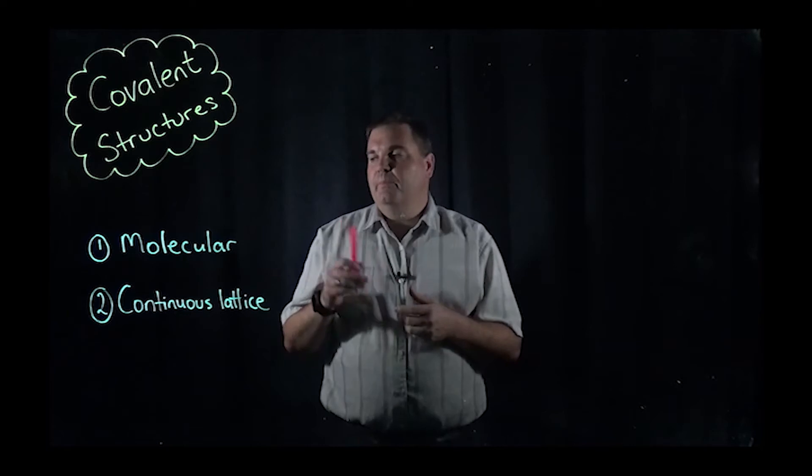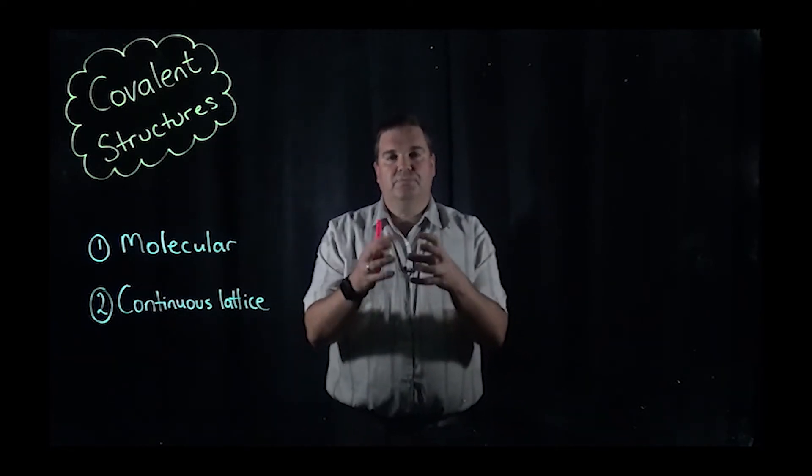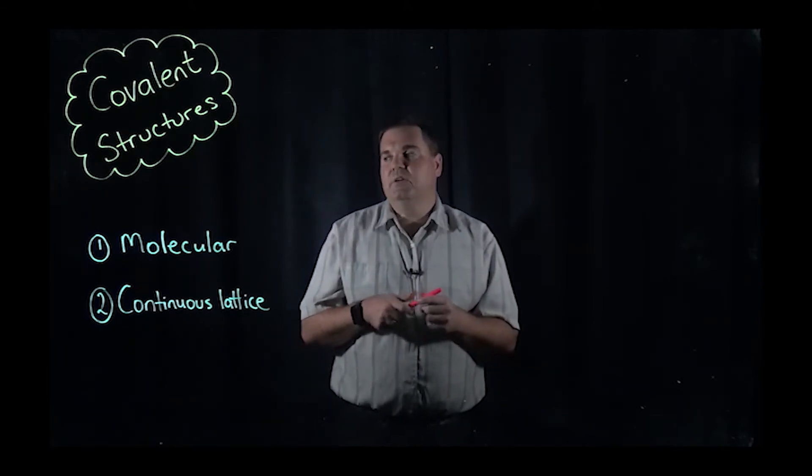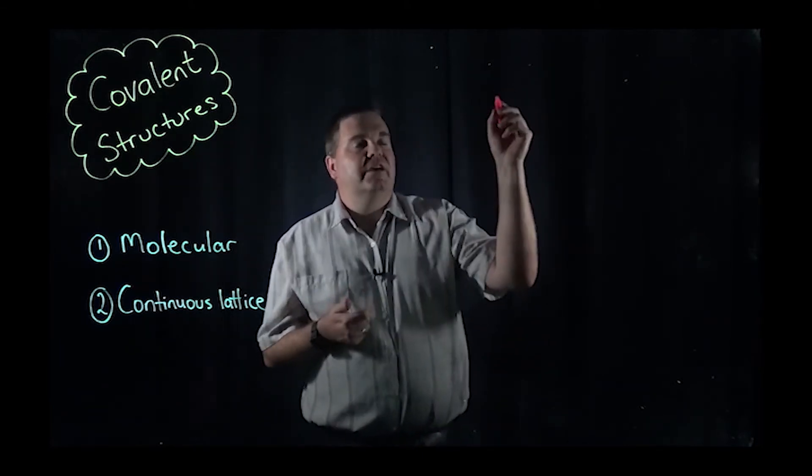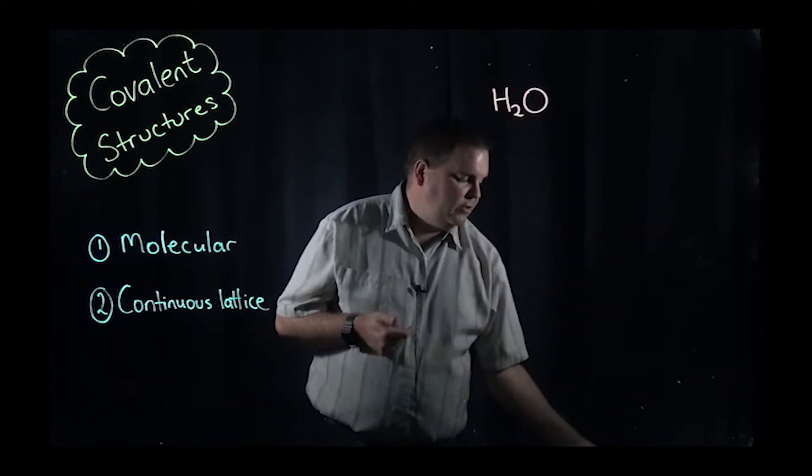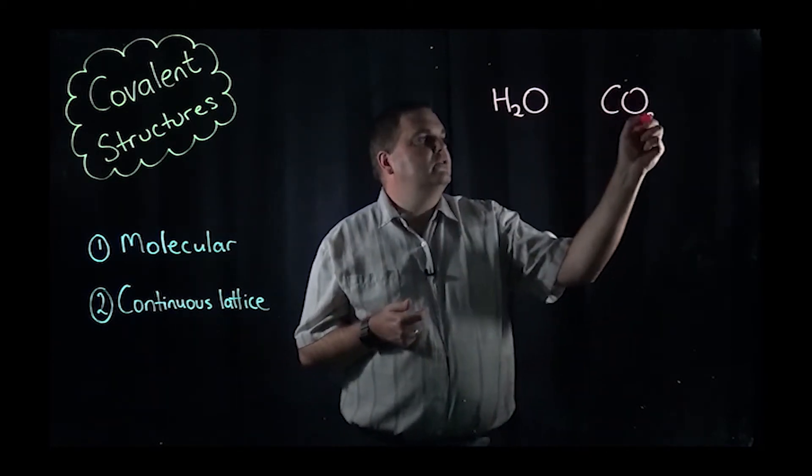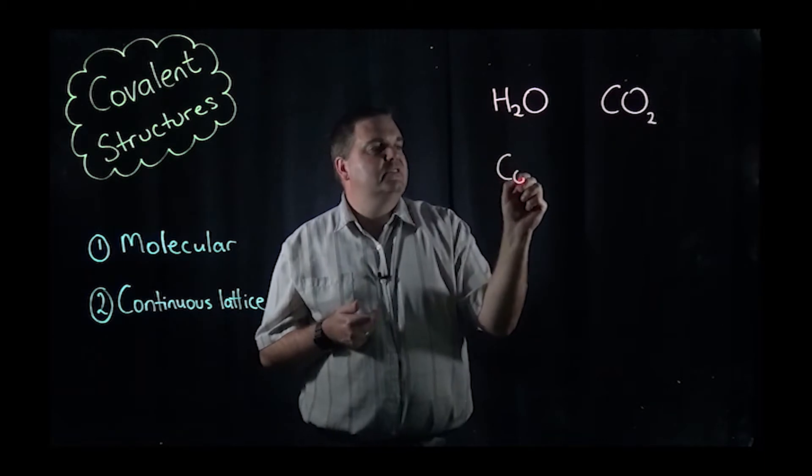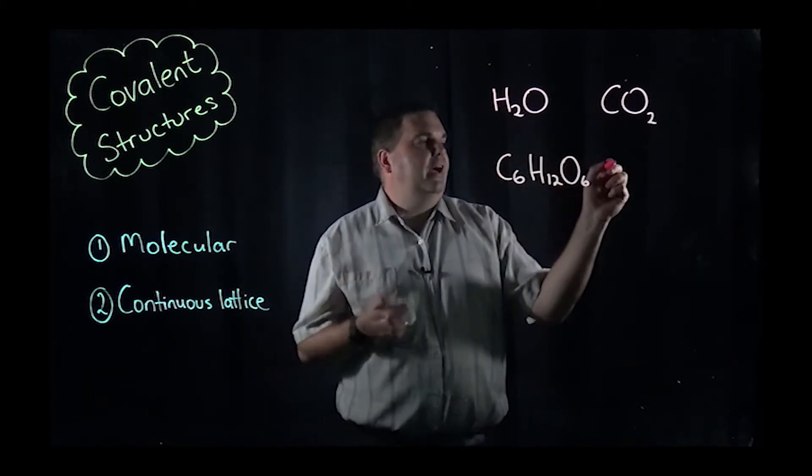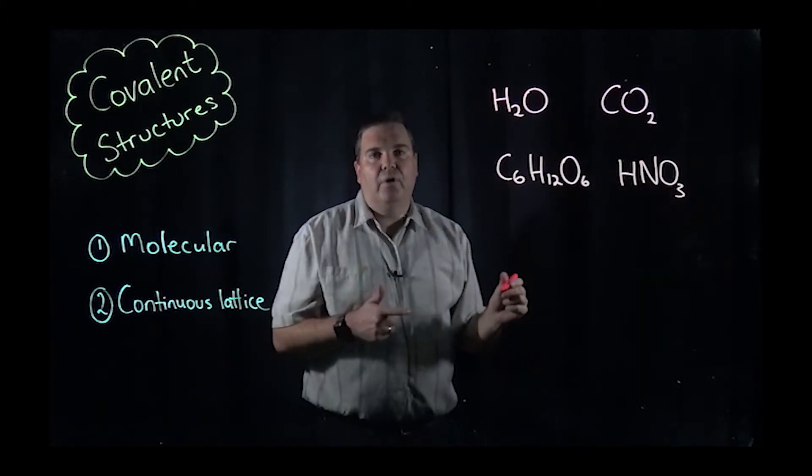The first thing I'm going to go through is what we call the molecular structure. Covalent molecules, and this word molecules means a small unit, are a bit different from ionic compounds. There's lots of examples of different molecules. An example is something like water H2O, that's a molecule. You've also got something like carbon dioxide CO2, you could have glucose C6H12O6, you could have nitric acid HNO3, and all of these are molecules.